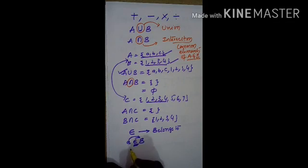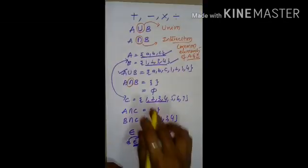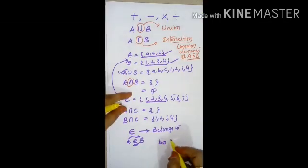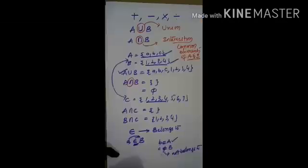For example, a, b, c belongs to A. Small b belongs to capital B. Whereas small c does not belong to B. We use 'not belongs to' notation.